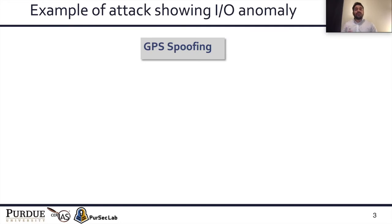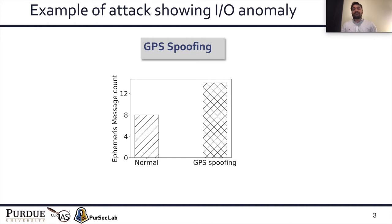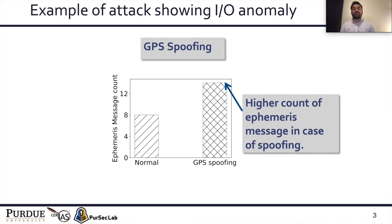However, this was just a hypothesis. To further our hypothesis, we conducted various attacks on UVs. For example, we conducted GPS spoofing on a drone system. GPS has multiple types of packets; one such packet is the ephemeris message, which tells you about the orbital position of the satellites. We noticed that during GPS spoofing, we observed a higher count of ephemeris messages — you can think of this higher count as higher IO activity.